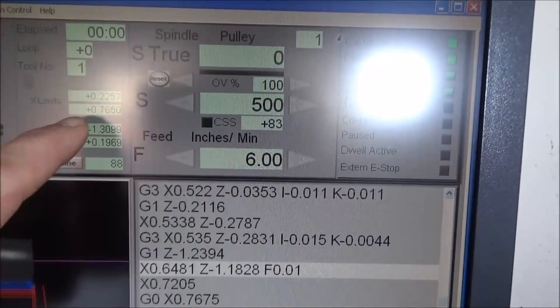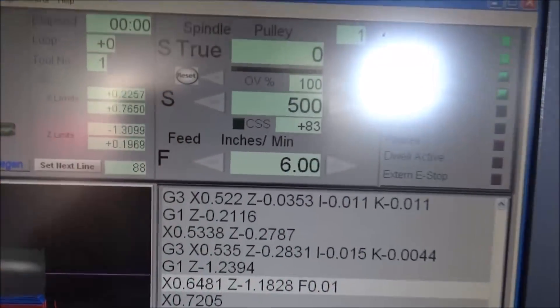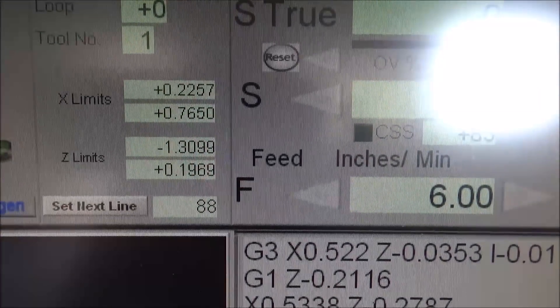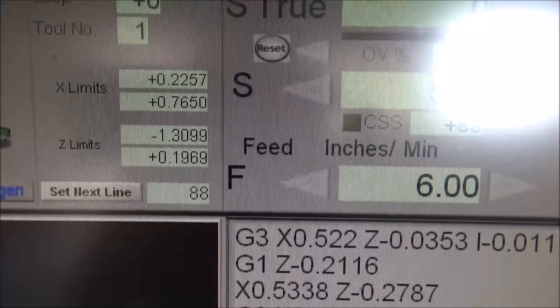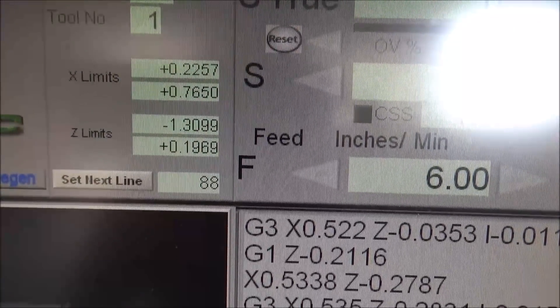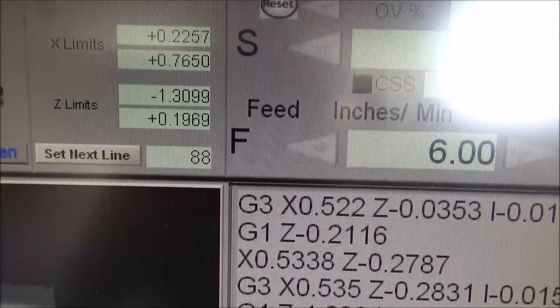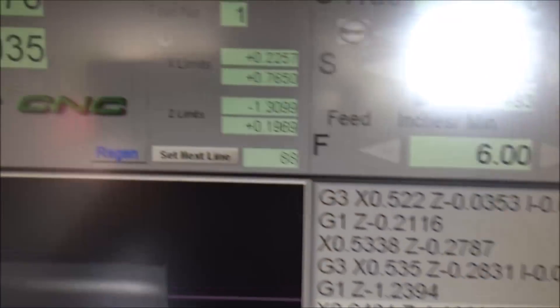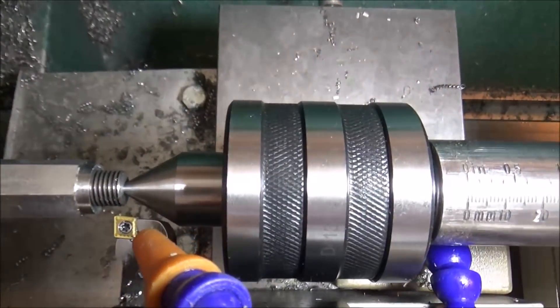So I'm going to take a look at Mach 3, and you can see that our X limit is 0.2257 and our Z limit is 0.169 in the positive. So right now we're currently at 0.2035, so I don't think I'm going back any further than that. So that should clear.